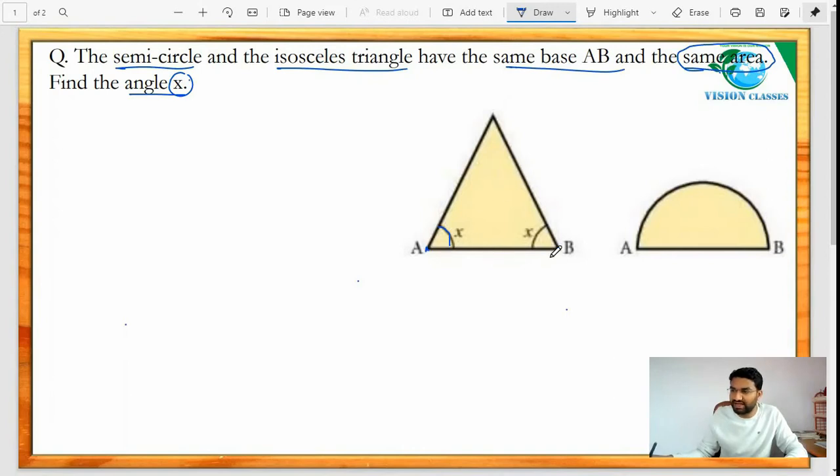...and semicircle having AB diameter which is also the same as that of AB of the triangle, right? Now area of triangle is equal to area of circle - that is what is given, right?